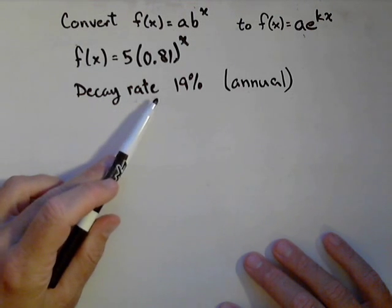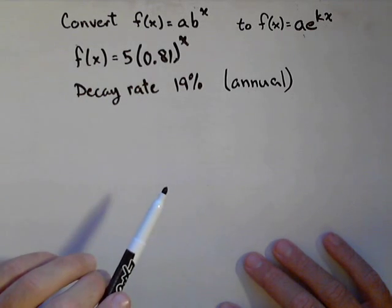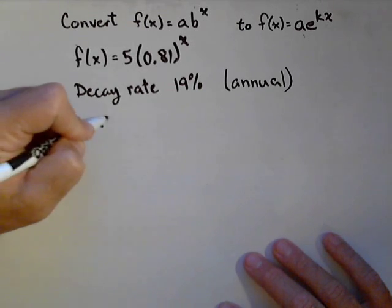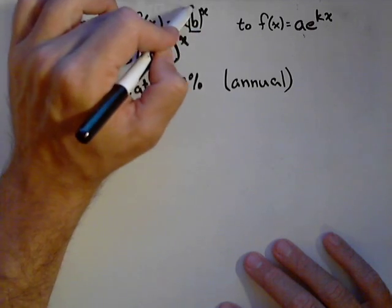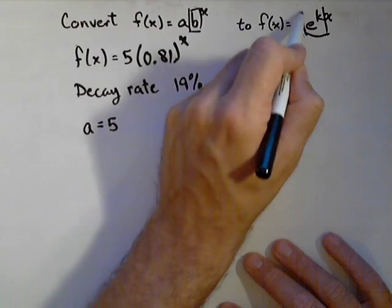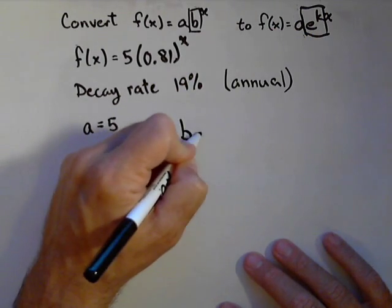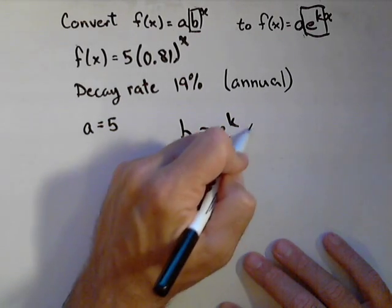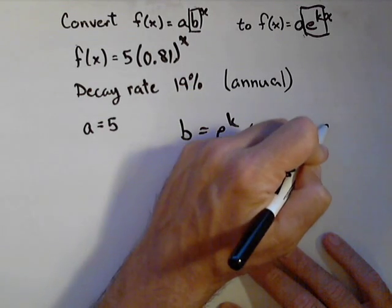Per change in 1 of whatever X is, we'd lose 19%. Now, converting the forms, we already know that A is going to be 5. The B in this form is equal to E to the K in this form, so B equals E to the K. We can solve this with logarithms, which means that K equals the natural log of B.